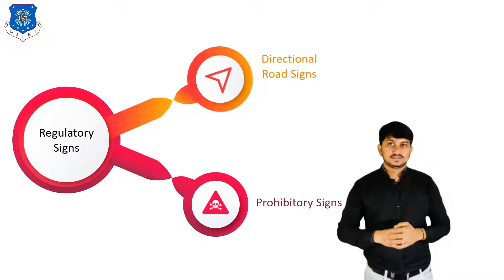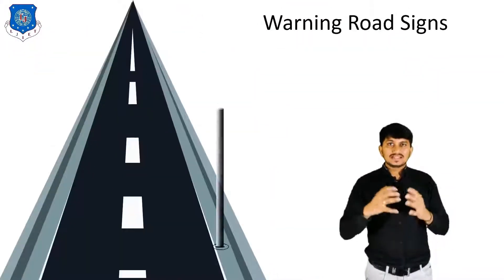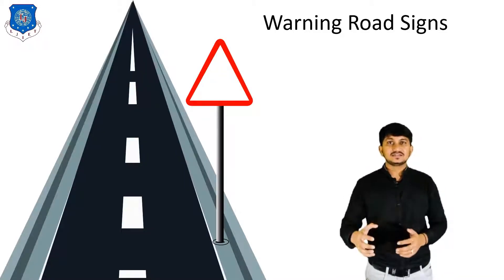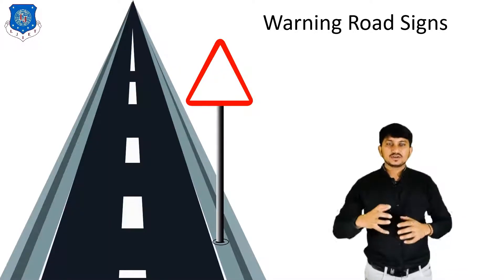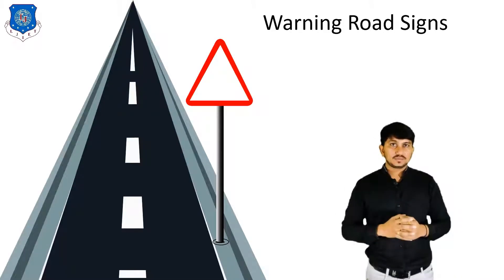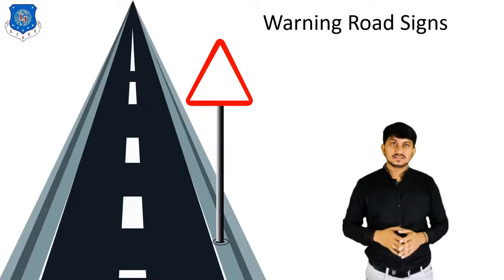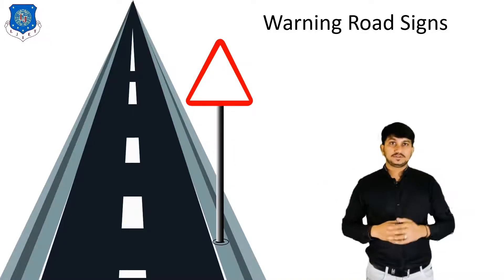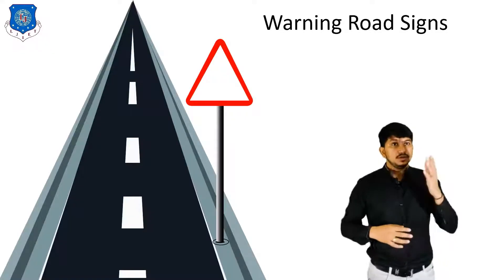Now let's move to Warning Signs. Warning Signs are used to warn the road user of certain hazardous conditions that exist on or adjacent to the roadway, and are of great help in ensuring safety of the traffic. They have a white background, red borders and black symbols. Signs are to be located at sufficient distances — on National Highway or State Highway it will be around 120 meters, on Major District Road it is about 90 meters, on Other District Road it is 60 meters, and on Village Road it is about 40 meters respectively.